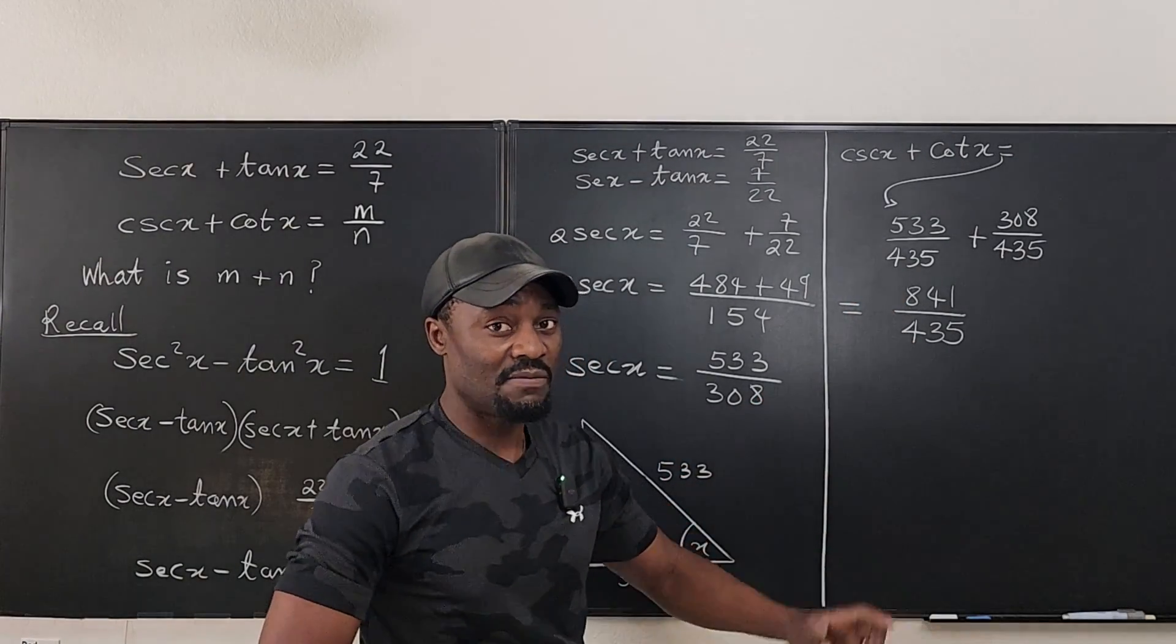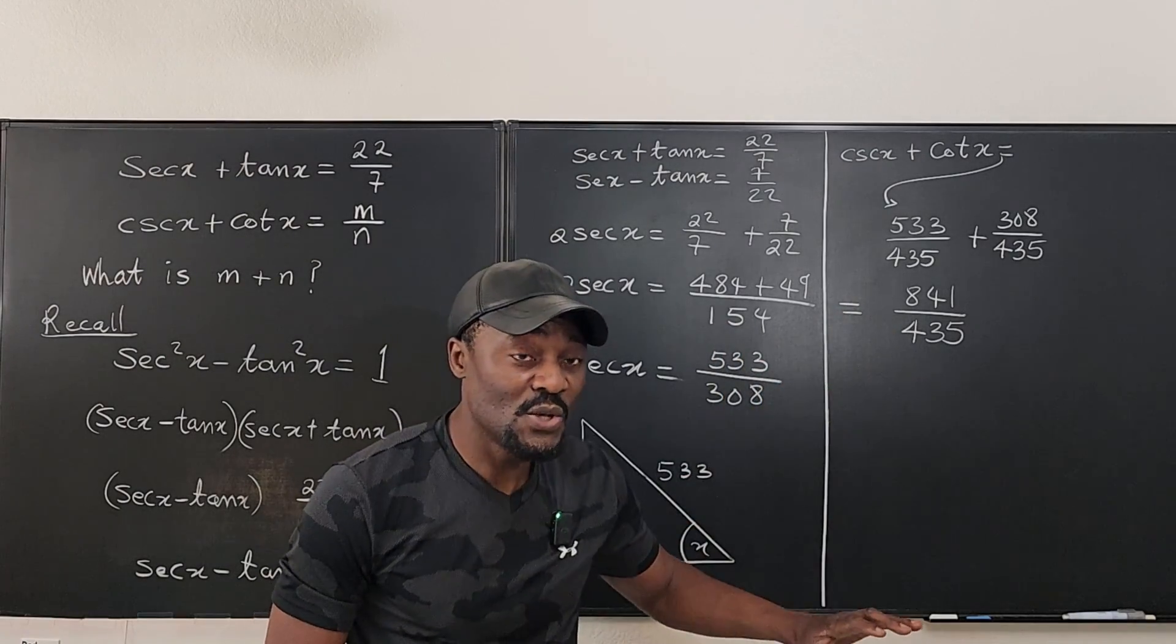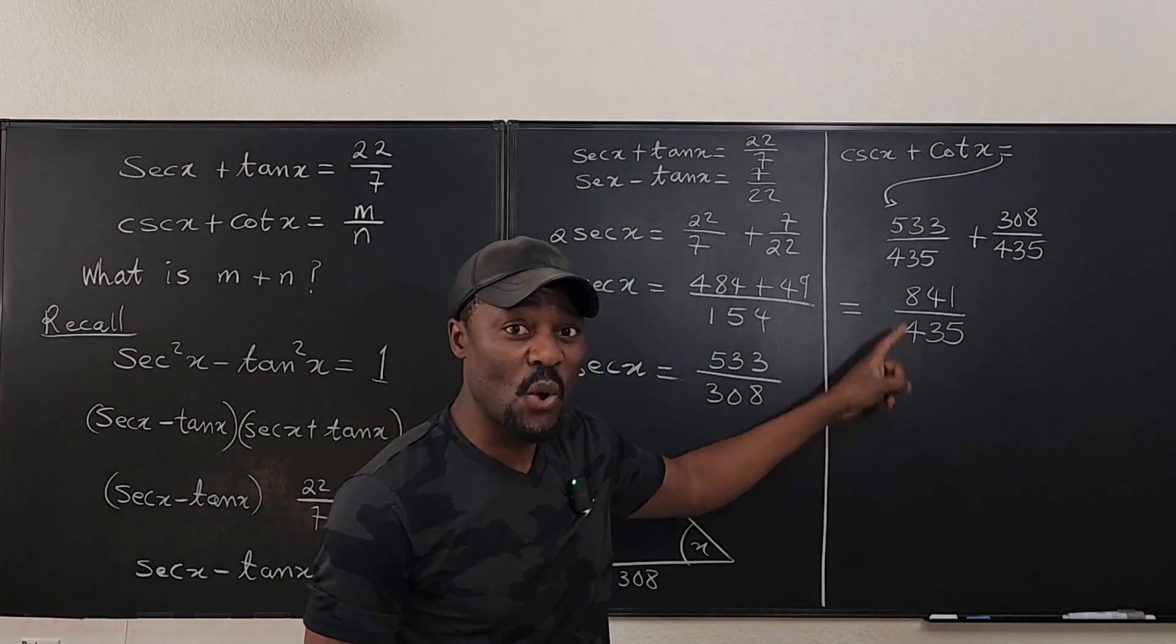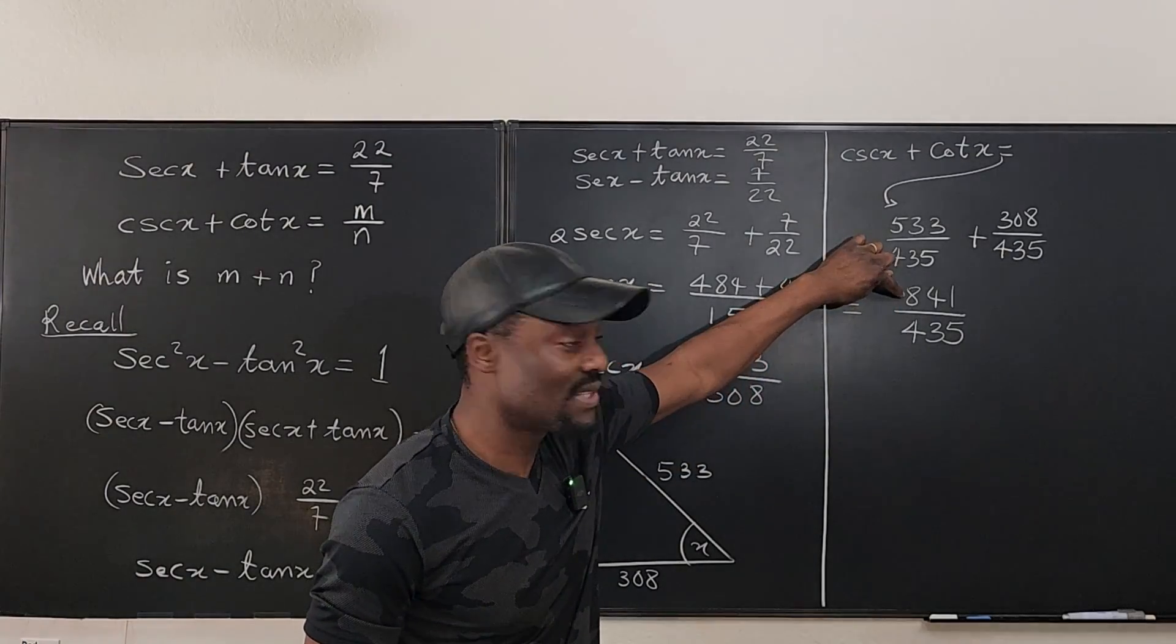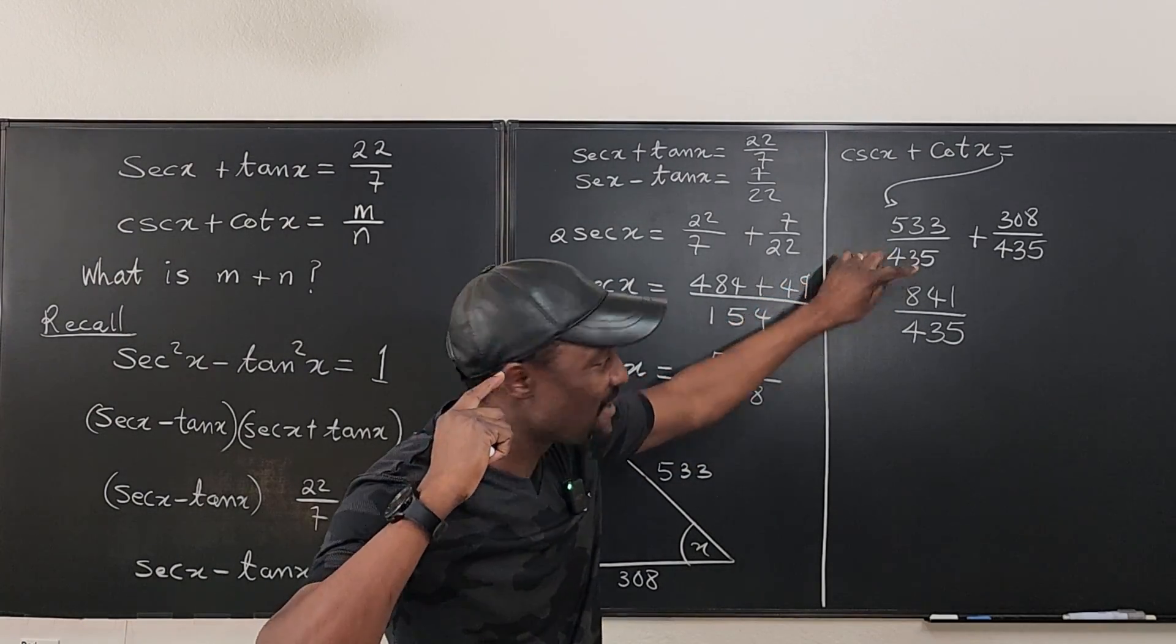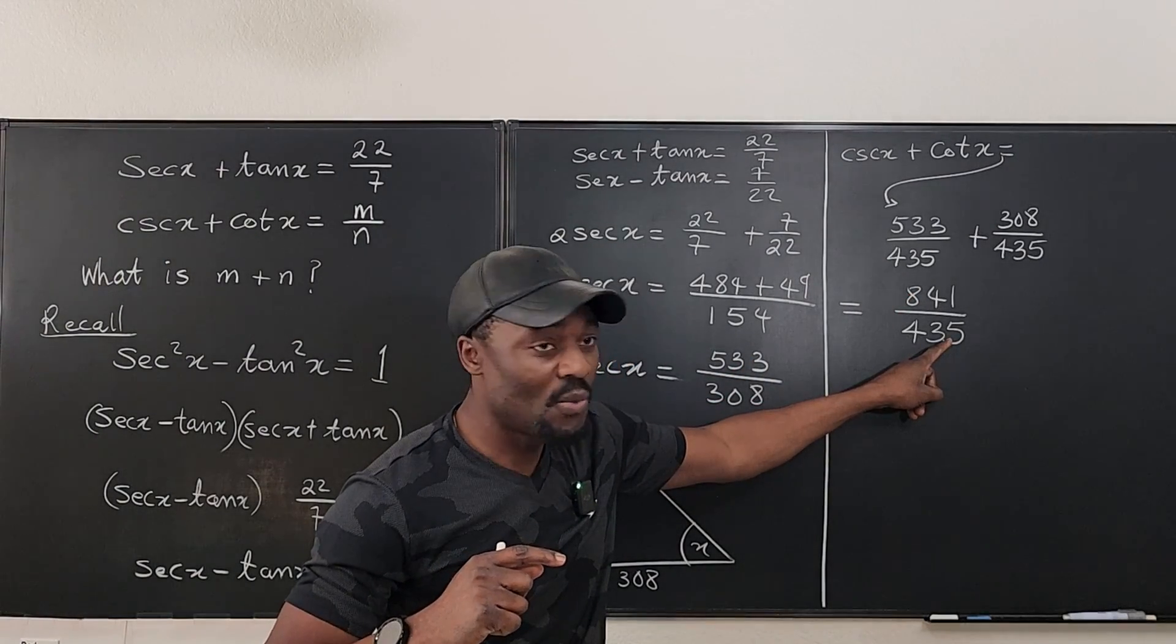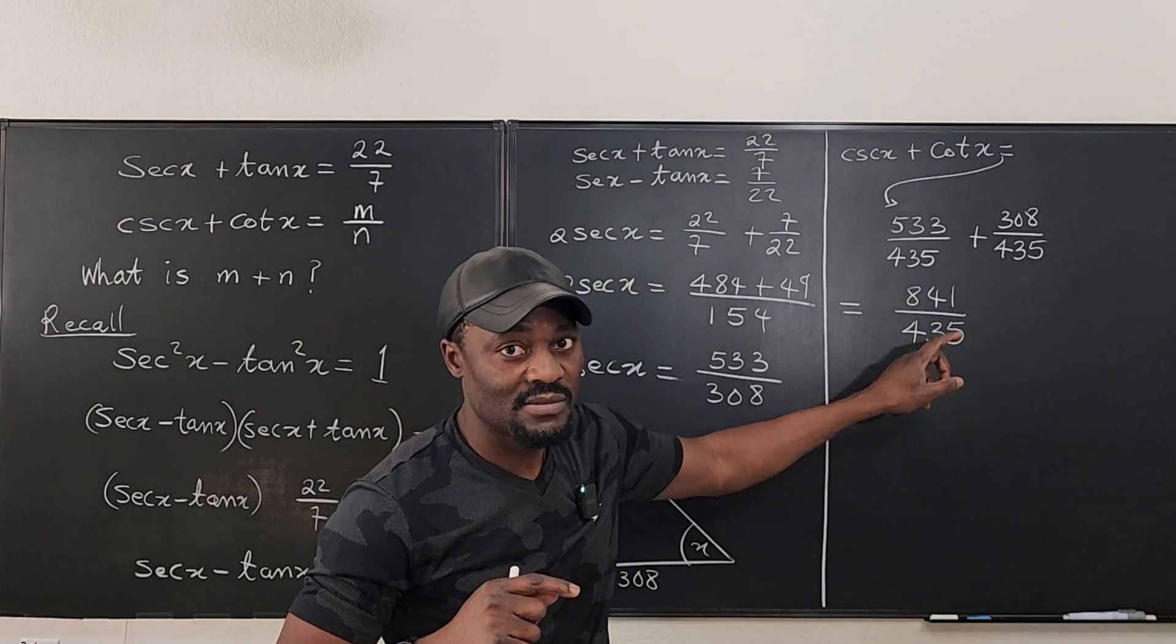Remember, a fraction is only defined properly if it is reduced. So you have to think, is there a number that divides this that also divides this? I know this is the square of 29. So I'm just going to think whether 29 divides this. Otherwise they're relatively prime.